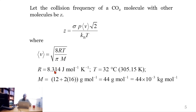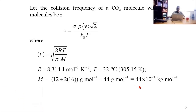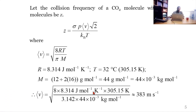The gas constant R has its standard value. The temperature given is 32°C, which converts to 305.15 K. The molar mass is the molar mass of CO₂, obtained by adding the mass of carbon plus 2 times the mass of oxygen, giving 44 g/mol, which converts to 44 × 10⁻³ kg/mol. All of these values can be substituted into the mean speed formula.